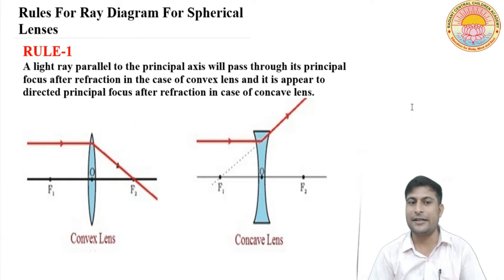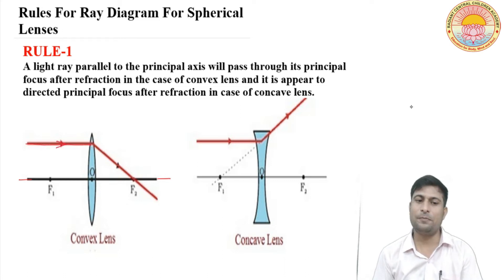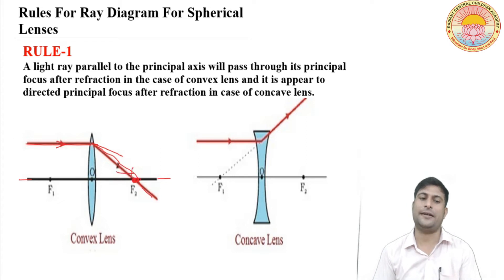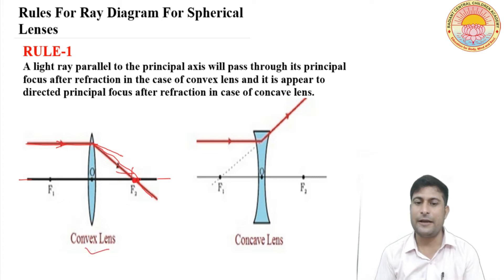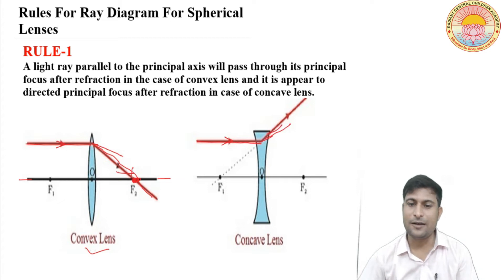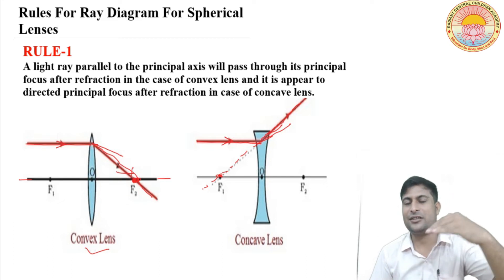It will be directed towards the principal focus of the concave lens. Friends, you can see F1 and F2 on the principal axis. A parallel light ray will pass through the principal focus in the case of convex lens. This parallel light ray after refraction will be directed towards the principal focus of the concave lens.